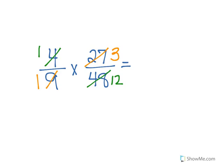9 divided by 9 is 1, and 27 divided by 9 is 3. Now I have 1 times 3 over 12. Is there anything that divides into 3 and 12? Yes, 3. So 3 divided by 3 is 1 and 12 divided by 3 is 4. Now I'm left with 1 times 1 over 1 times 4, which gives me one-fourth.